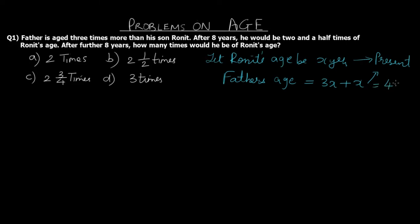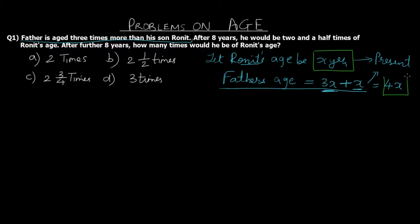So father's age equals 3x plus x, which is 4x. This is a key factor to remember — it is three times more than his son's age, not simply 3x. Three times is okay but we need to add Ronit's age as well, hence one extra x. So in present time, Ronit's age is x years and father's age is 4x.